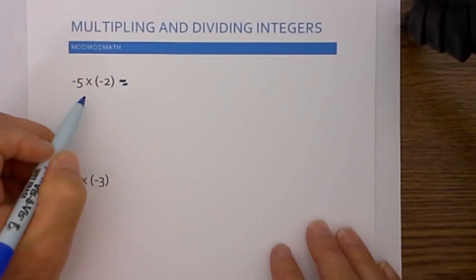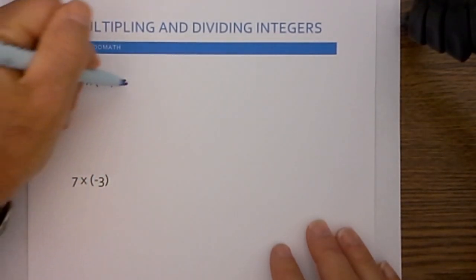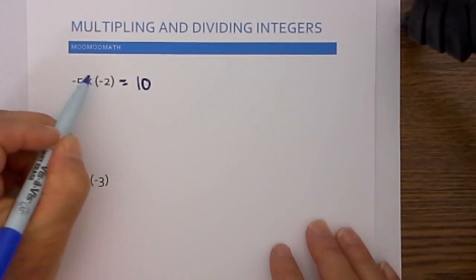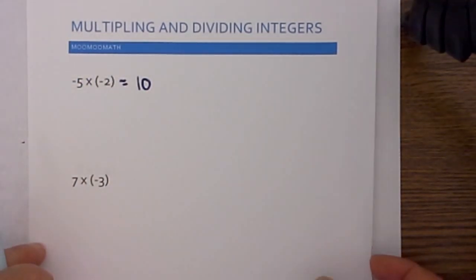what you do first, you just multiply the two numbers together like there are no signs. So 5 times 2 is 10. And then since both numbers are negative, the answer will be positive.